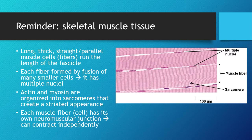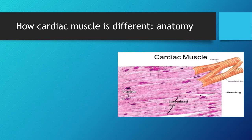Cardiac muscle has some distinct differences but is more or less like skeletal muscle. It's still striated and still has myosin and actin organized into thick and thin filaments. It still relies on calcium binding to troponin to move tropomyosin out of the way to allow contraction, and it still has T-tubules and sarcoplasmic reticulum — all those things you've learned about skeletal muscle still apply.